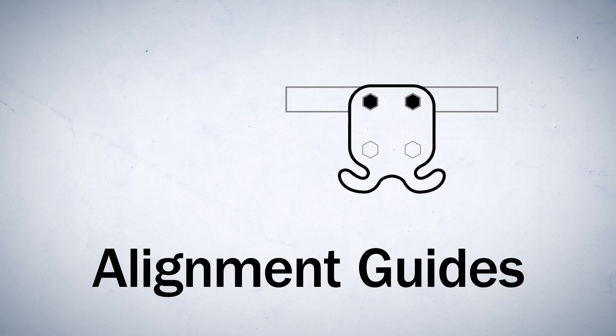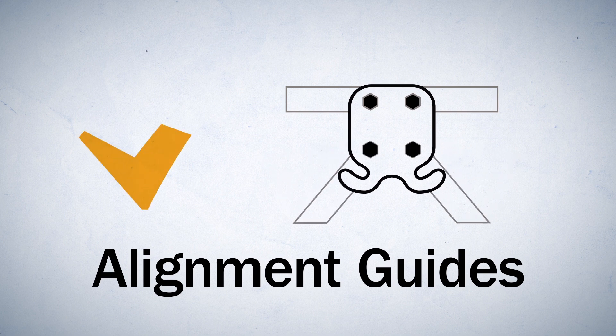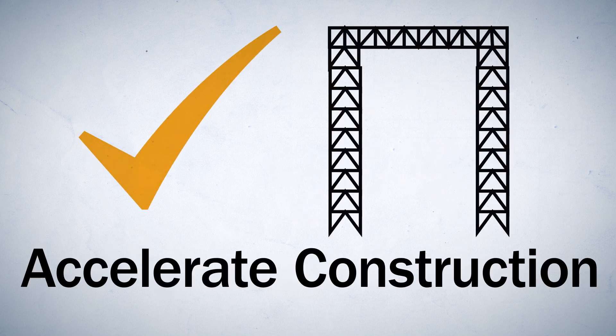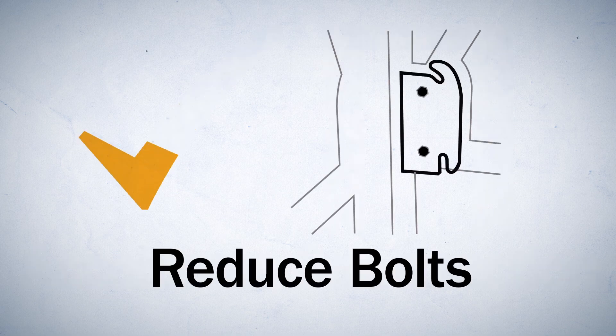Adding alignment guides that make it easier to put pieces together. Designing platforms that can be mounted in between columns to accelerate construction. And significantly reducing the overall number of bolts needed to erect the structure.